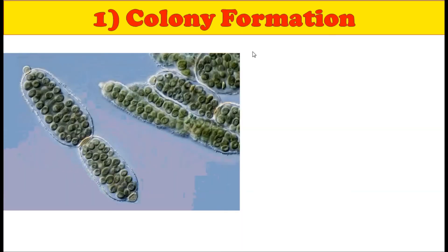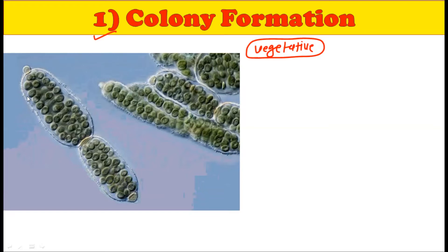The first thing you should know about reproduction in Nostoc is that Nostoc is primarily reproduced by vegetative means. The very first method is colony formation. As you can observe in this picture, these are the colonies of Nostoc. Generally, these colonies get bigger and bigger as they grow older and older.